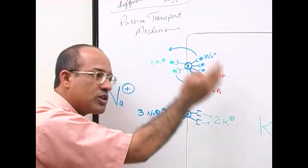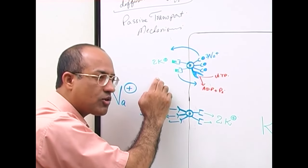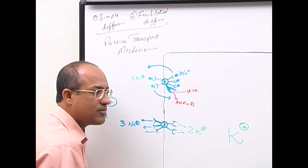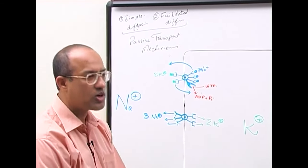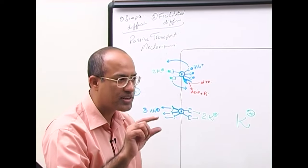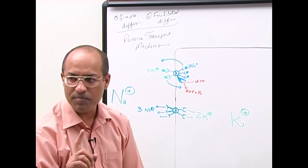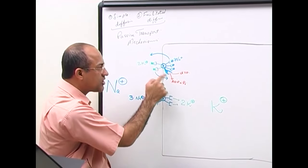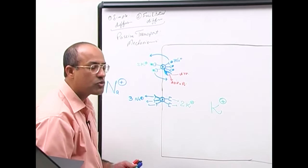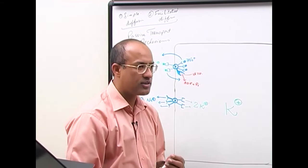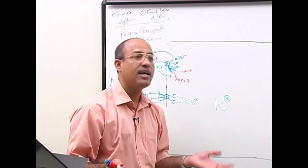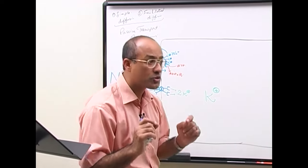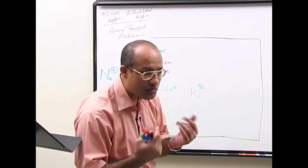At the same time, when three sodiums are pumped out, two potassiums are pumped from the extracellular to the intracellular environment, again against the concentration gradient of potassium. This sodium-potassium pump—called sodium-potassium ATPase because it breaks down ATP—is present in every cell, continuously throwing sodium out and pumping potassium in, maintaining high extracellular sodium and high intracellular potassium concentration.